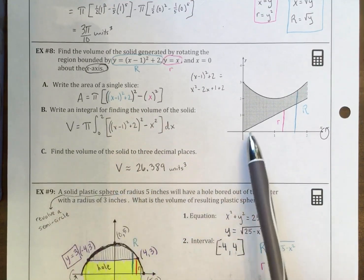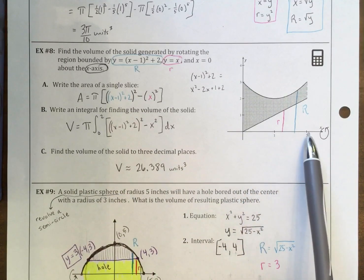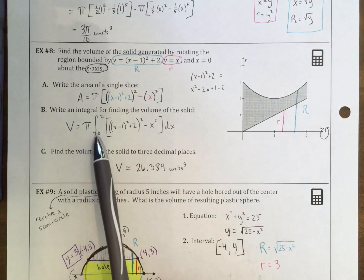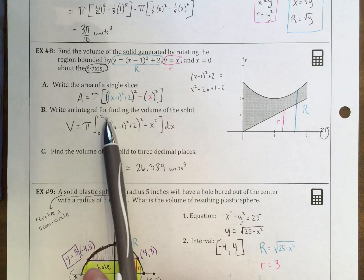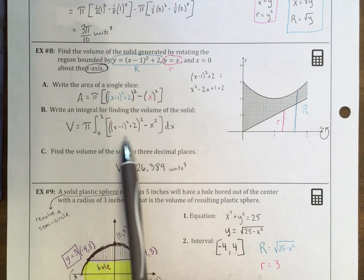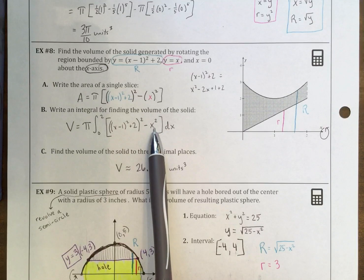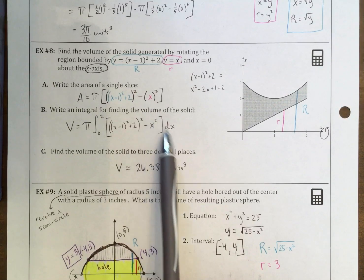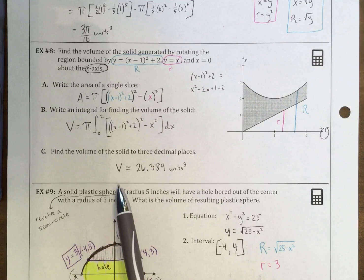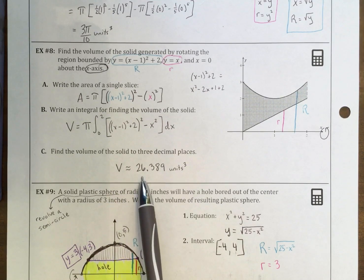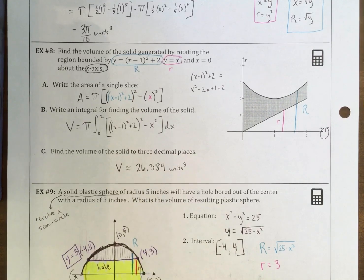The integral is going to go in terms of x, so it's going from 0 to 2. So we have pi times the integral from 0 to 2 of the big R, which was the parabola function squared, minus the line y equals x squared dx. And when you type that in your calculator, if you don't have a graphing calculator at home, you can use Desmos. You should get 26.389 units cubed.